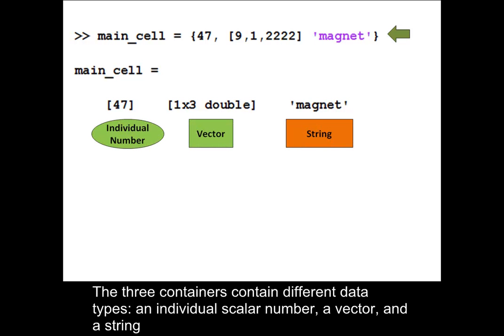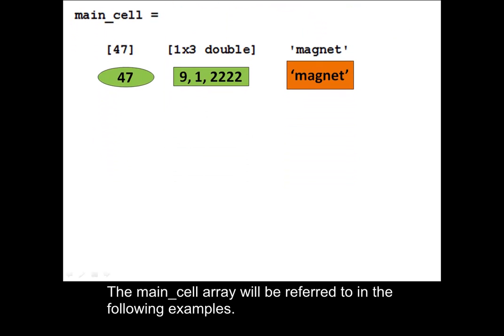The three containers contain different data types: an individual scalar number, a vector, and a string. The main_cell array will be referred to in the following examples.